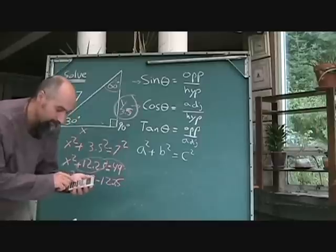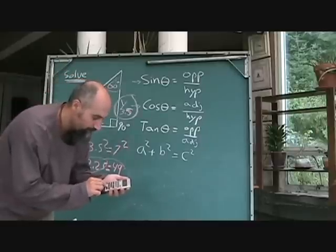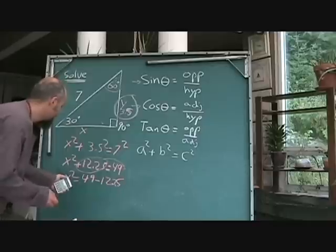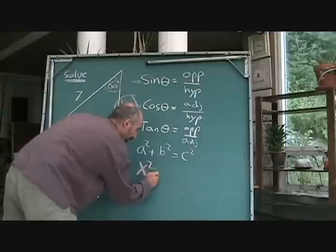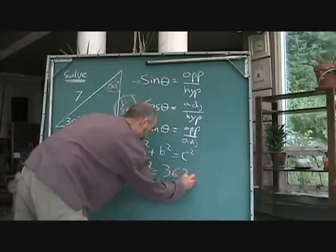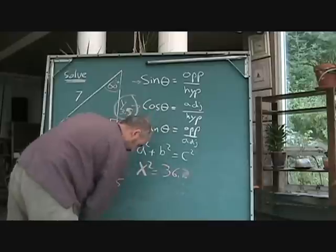So 49 minus 12.25 is 36.75. So right now we've got x squared is equal to 36.75.